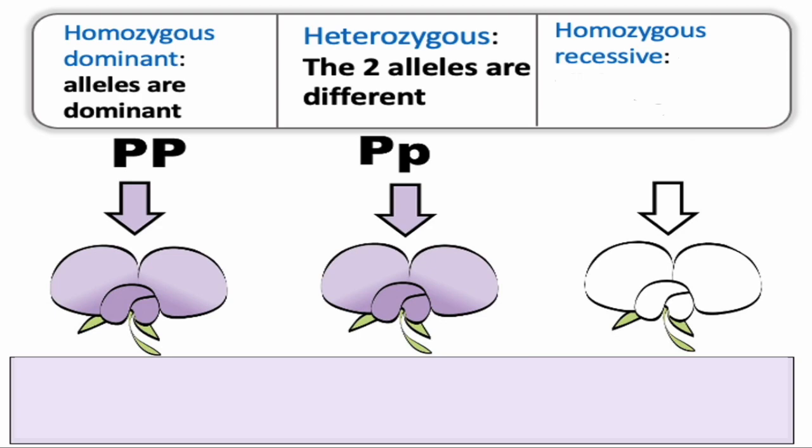Since this has two different alleles, your uppercase or dominant letter overshadows the recessive lowercase letter. That's why you have a phenotype of being purple. The flower to the far right has two lowercase p's. This is known as homozygous recessive — both of these alleles are recessive. If purple flowers are a dominant trait, any genotype with a dominant allele will be purple.